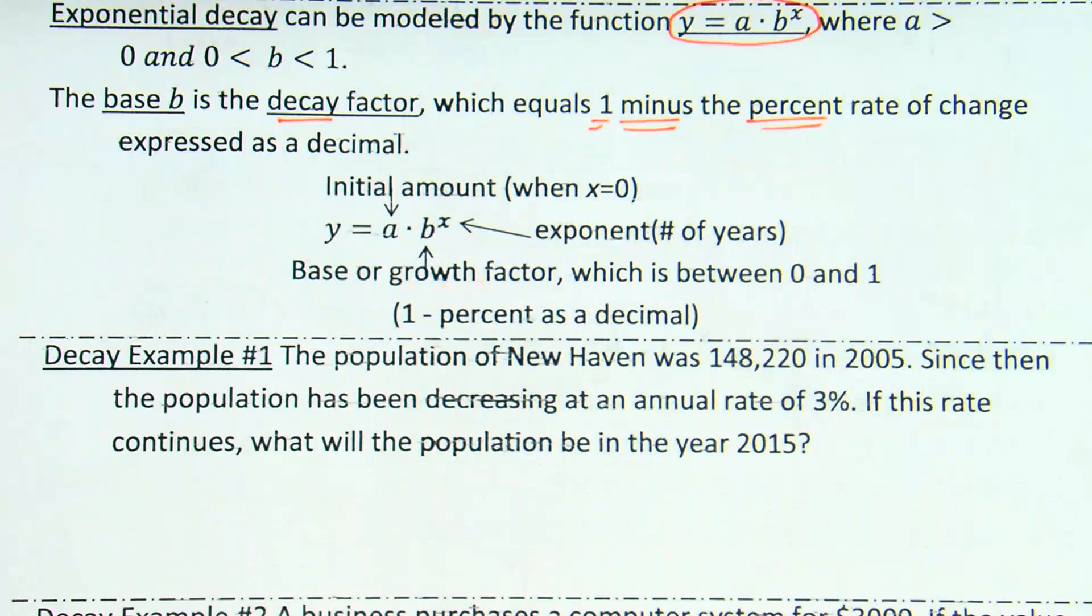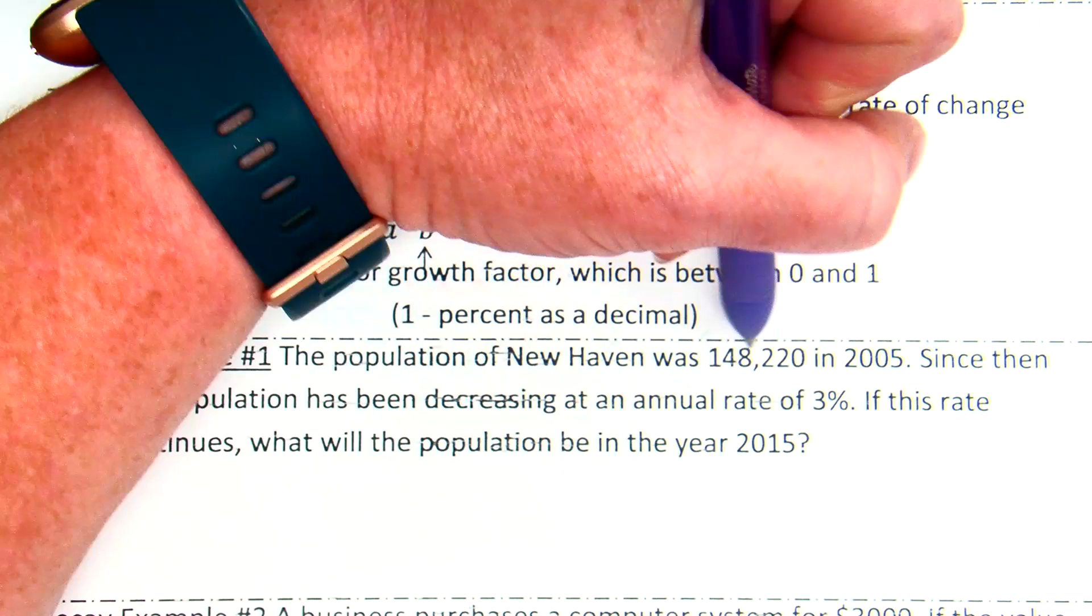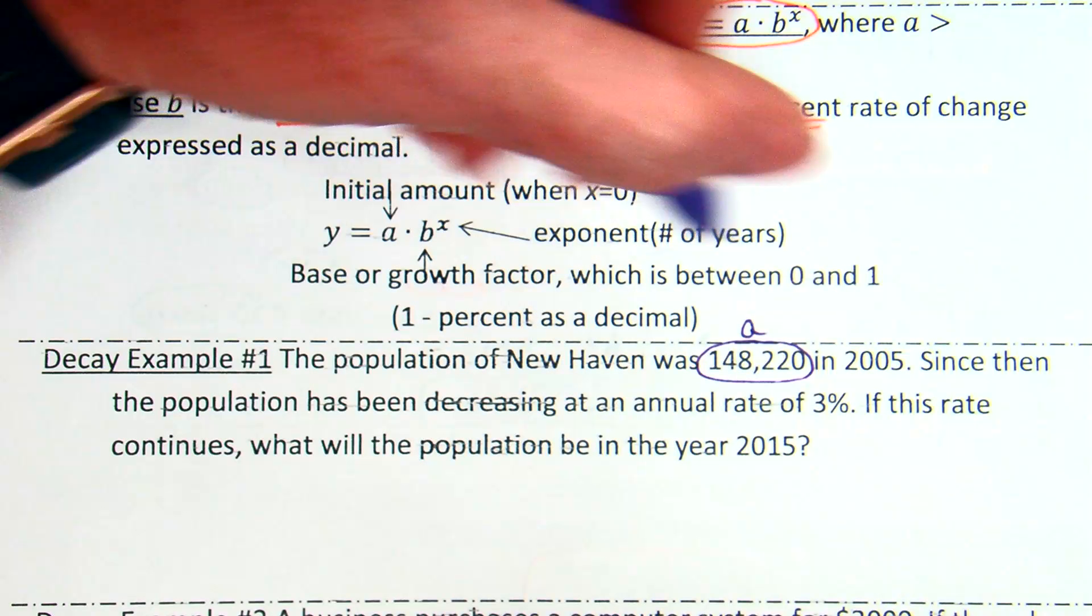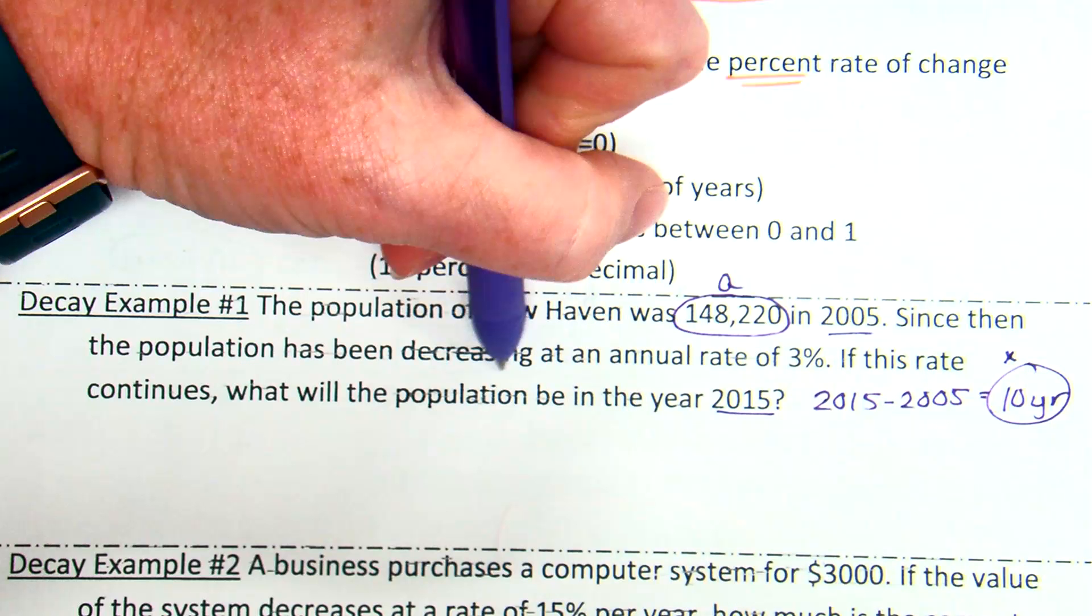Okay. What information can you tell me here? Okay. So, 148,220, our initial amount of A. Yeah. Initial amount of people, which we'll go in for A. 2005 is the beginning. 2015 is the end. So, what do you know from 2015 to 2005? 10 years. 10 years. And 10 years will go in place of X. Notice the population is decreasing at a rate of 3%. What do we know about 3%? 0.03.